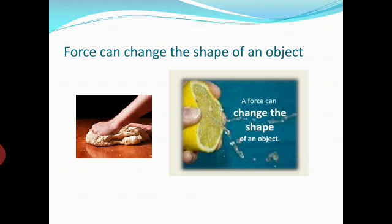The fourth effect is that force can change the shape of an object. For example, you may notice at home that when someone is kneading dough — like pizza dough or any kind of dough — they apply force with their hands, and clearly you can see that the shape of the dough changes with increasing force. In the same way, force can also change the shape of an orange — when you squeeze an orange and apply more force, you can see more change in its shape. So force can change the shape of an object.